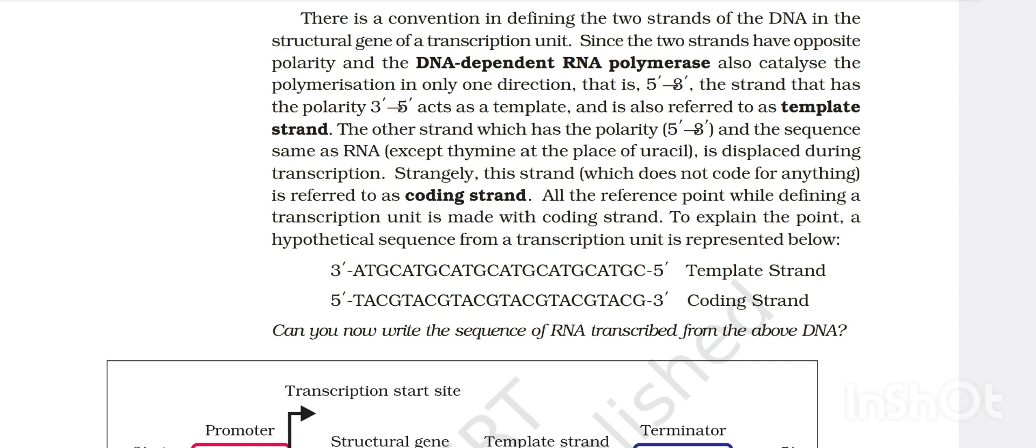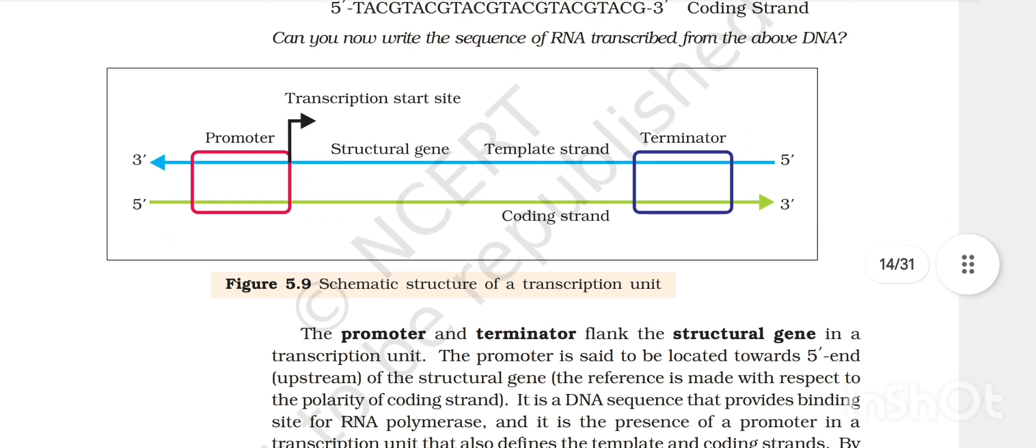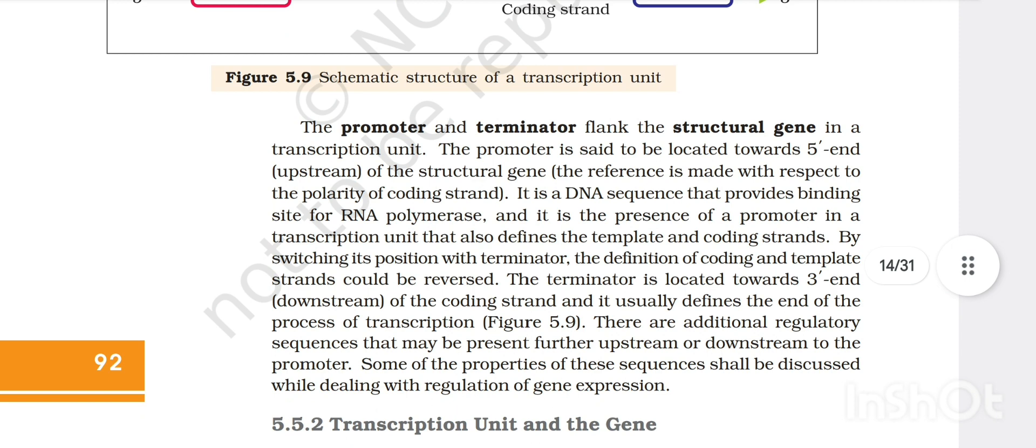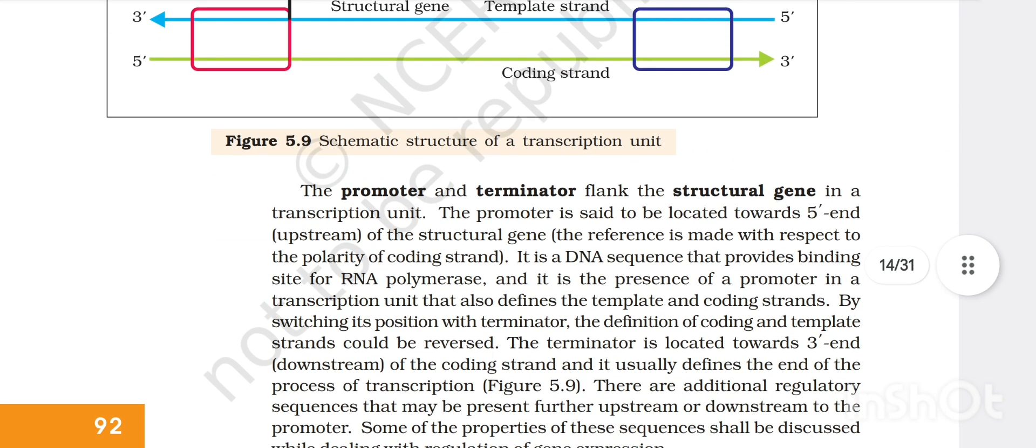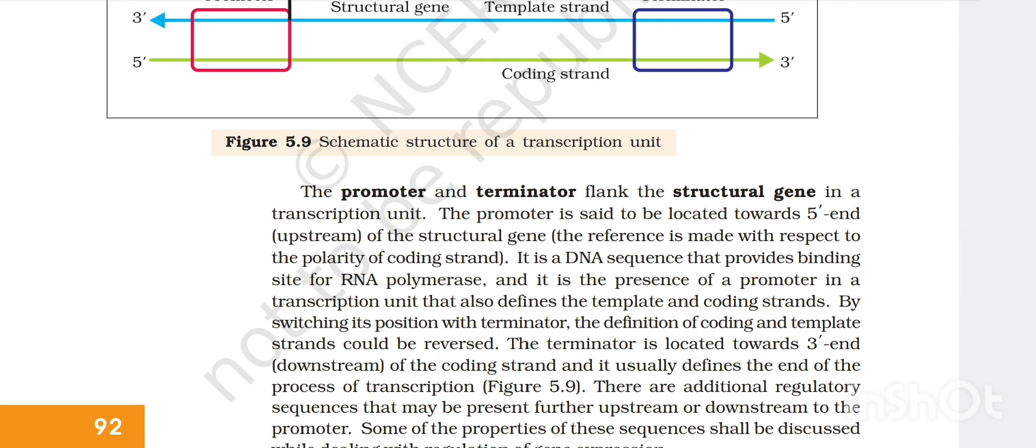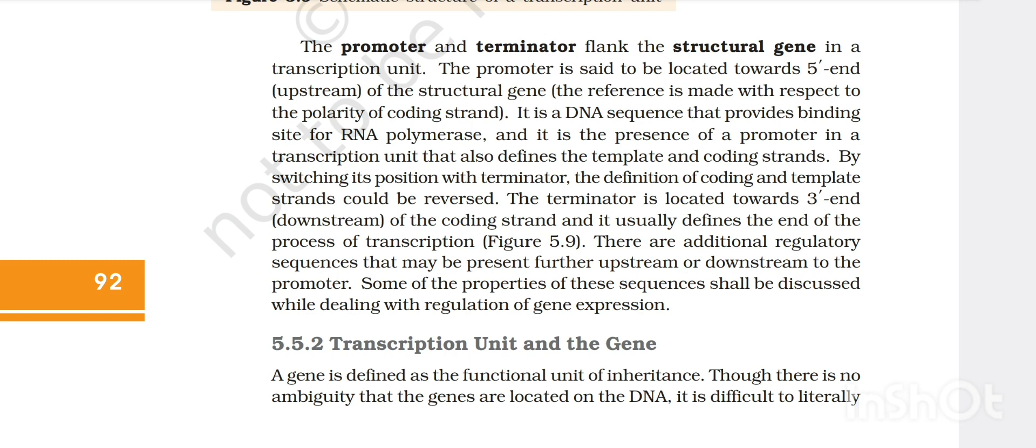The other strand which has the polarity 5' to 3' and the sequence same as RNA is displaced during transcription. Strangely this strand which does not code for anything is referred to as coding strand. Because on that template strand new mRNA will be formed which is exactly similar to the coding strand. The promoter and terminator flank the structural gene. Here is the promoter, then the structural gene, and here is the terminator. The promoter is said to be located towards 5' end or upstream of a structural gene. The reference is made with respect to polarity of coding strand.